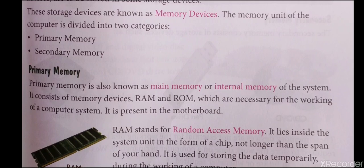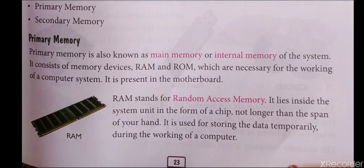The memory unit of the computer is divided into two categories: first is primary memory, second is secondary memory. Let's start with primary memory. Primary memory is also known as main memory and internal memory of the system. It consists of two memory devices: RAM and ROM.